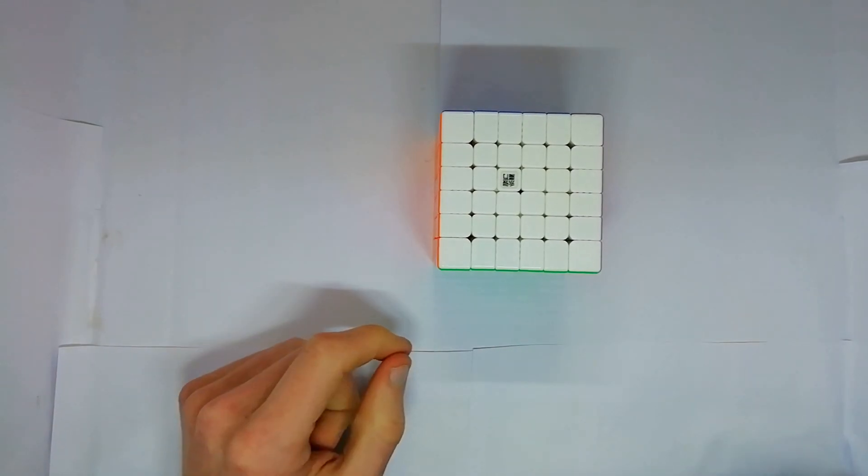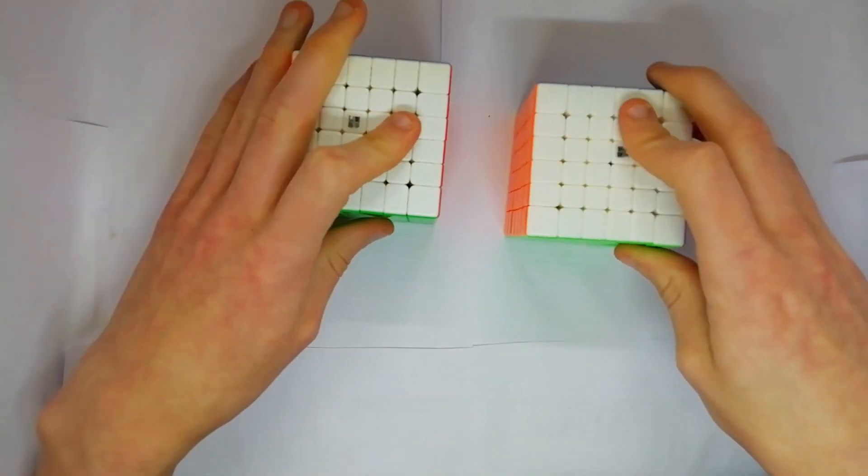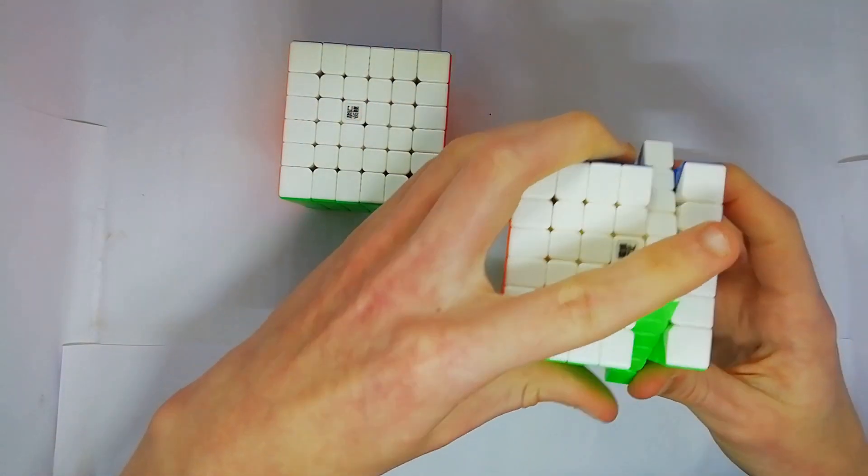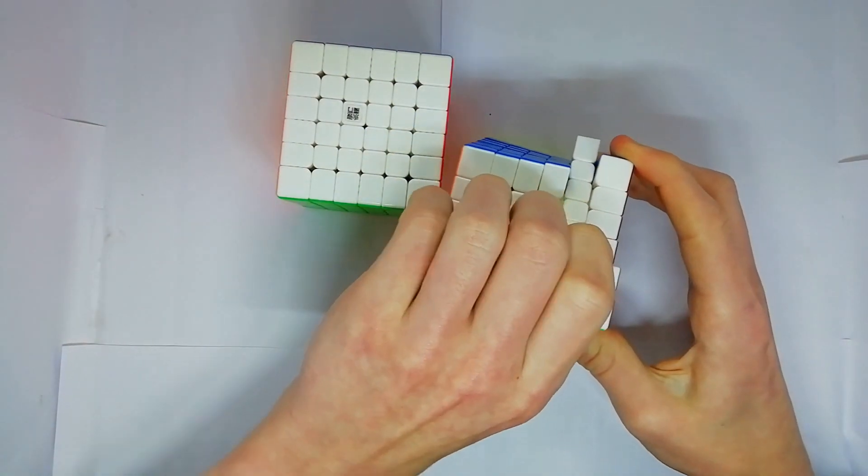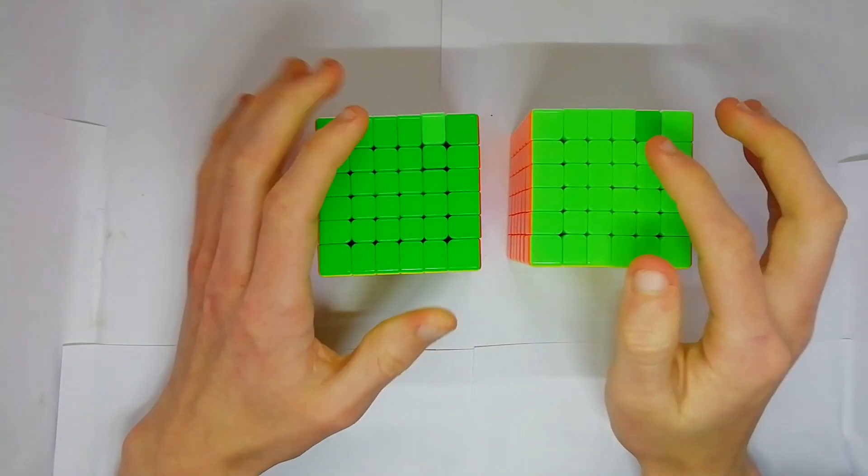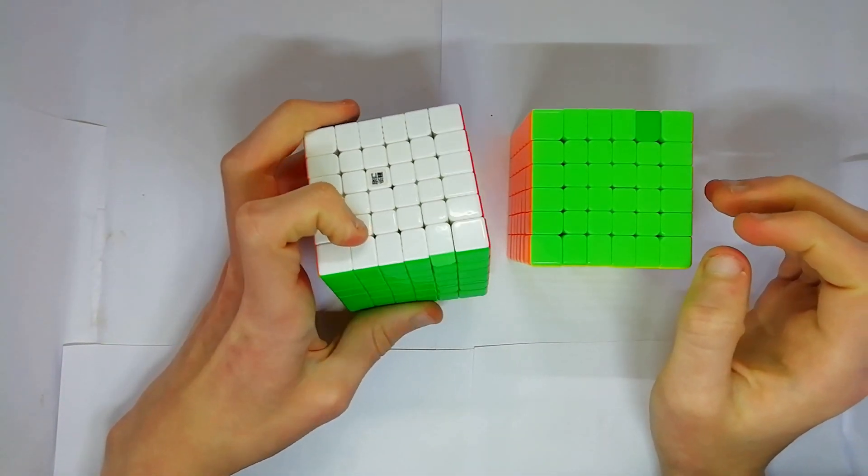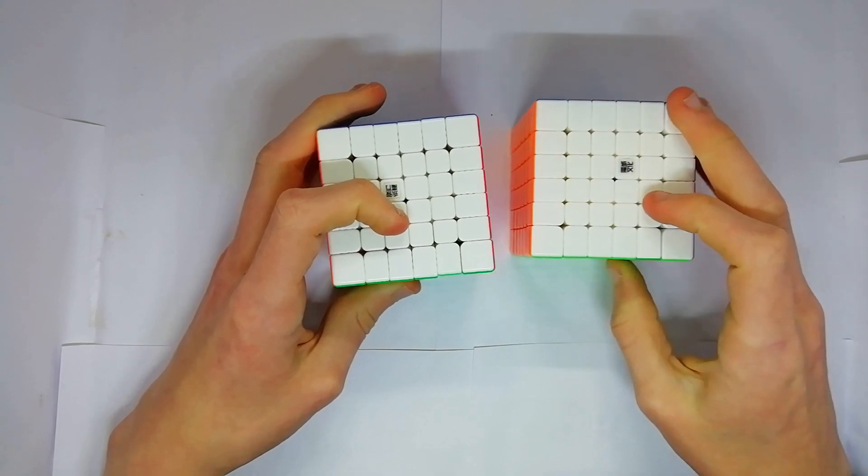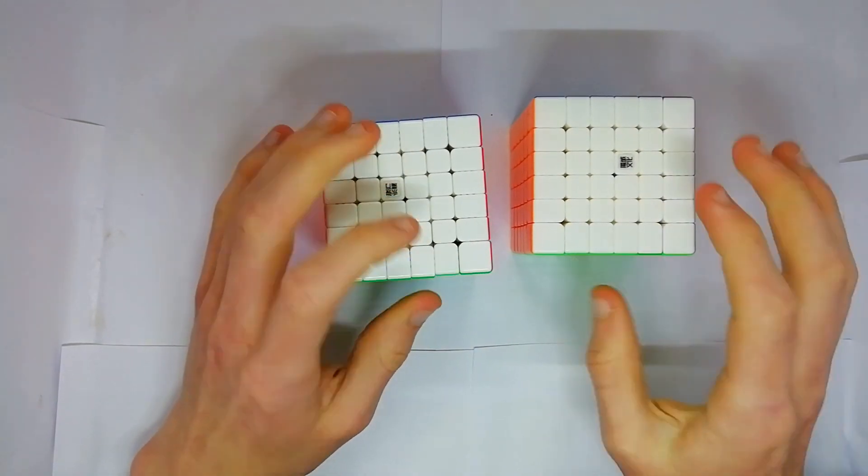And to demonstrate that, I'm going to get the Aoshi GTSM here, and I'm going to take a piece out. So as you can see from the different shades of green here, what I've done is I've taken one piece out of each of them and switched them around.